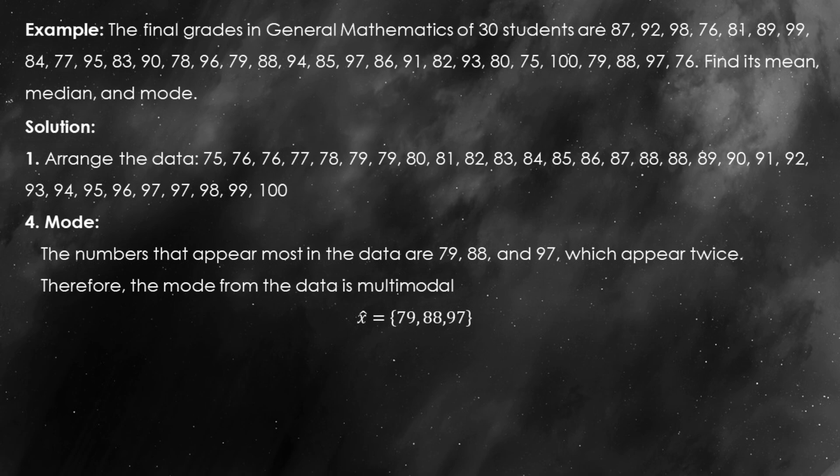We've calculated the mean, median, and mode for the final grades of 30 students in general mathematics. The mean is 85.33, the median is 87.5, and the mode is 79, 88, and 97. Each of these measures gives us different insights into the distribution of grades. The mean tells us that, on average, students scored about 85.33. The median shows that the middle score is slightly higher, at 87.5, while the mode reveals that 79, 88, and 97 were the most common scores in the class.